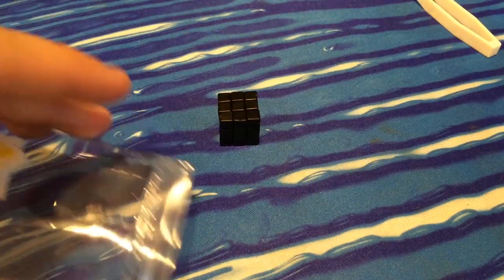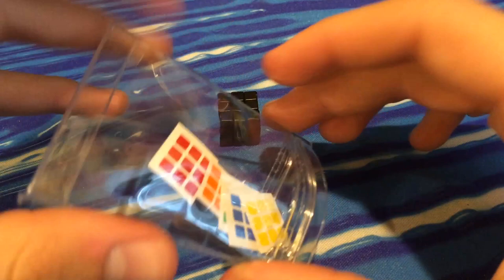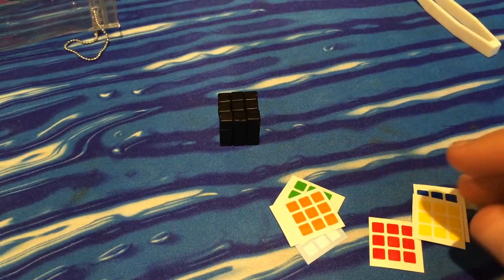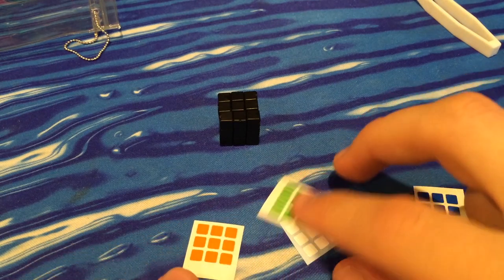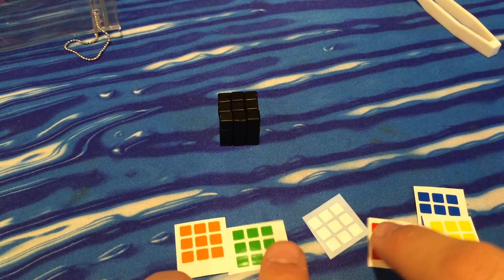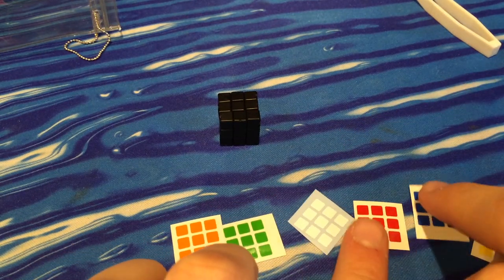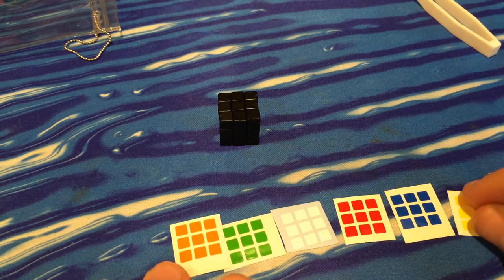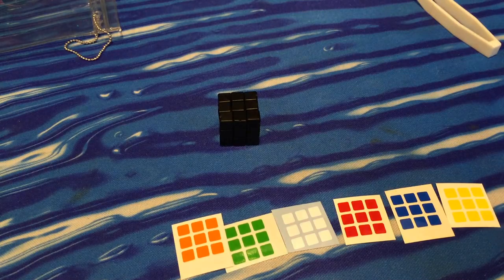I've assembled the cube and put two drops of Maru lube in there. Now I'm going to sticker it, but I wanted to show you guys the shades first. Here are all the shades: orange, green, white, red, blue, yellow. They look like the standard color scheme. I'm going to go ahead and put these on and then get back to you guys.